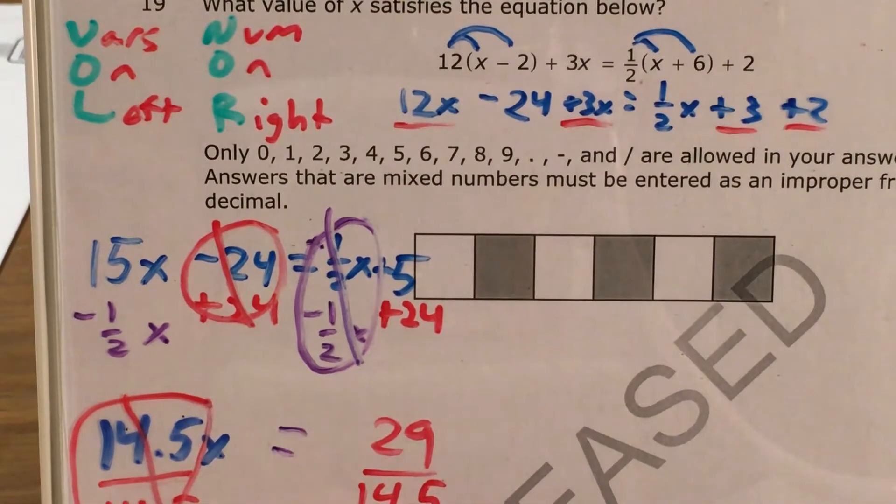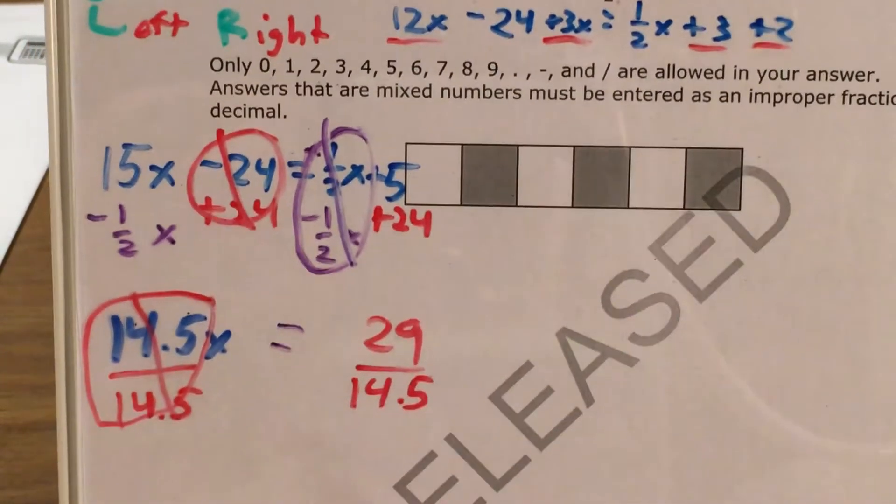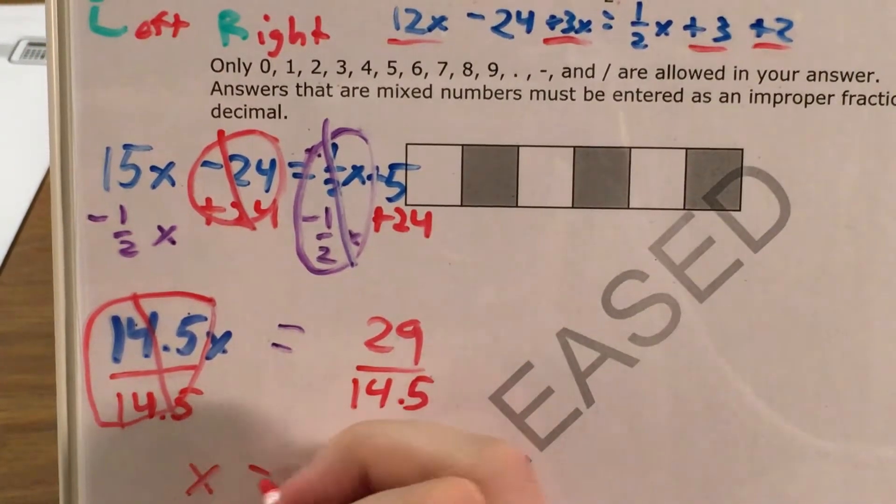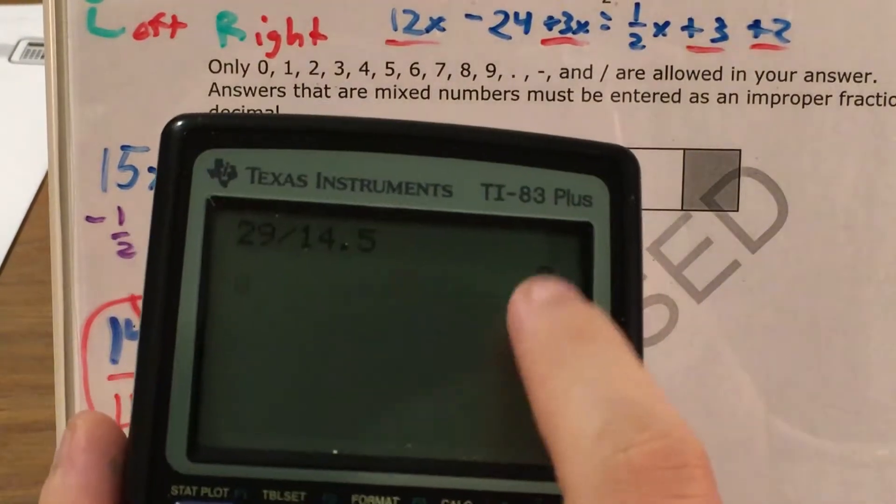But now we just need to get rid of 14 and a half. Since it's being multiplied by x I'm going to divide. 14 and a half divided by 14 and a half is going to cancel. It would turn into 1 but we don't need to write 1 if it's just 1x. So I'm left with x equals, and now I just need to find out 29 divided by 14 and a half which is 2.